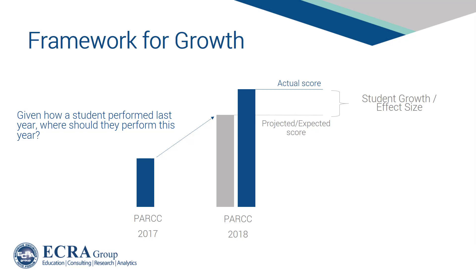Competing approaches for measuring student growth are distinguished by the methodology used to establish projections or expectations, along with the methodology used to measure the distance between a student's projected score and their actual score. Linear regression is the methodology chosen by ISBE to establish growth projections and expectations and to produce growth scores.